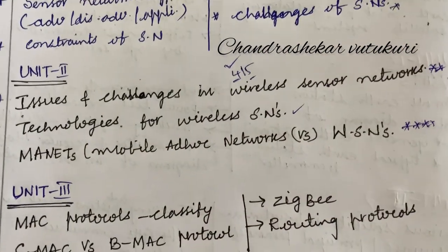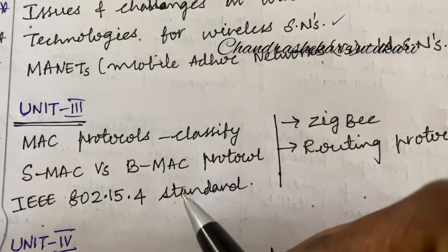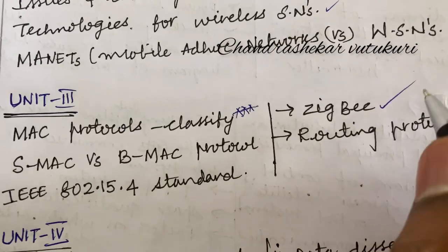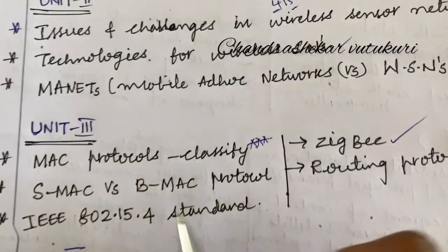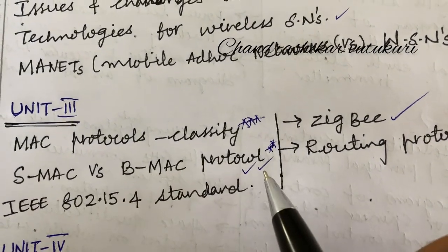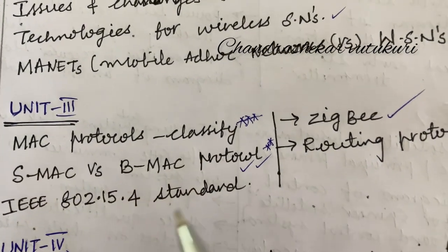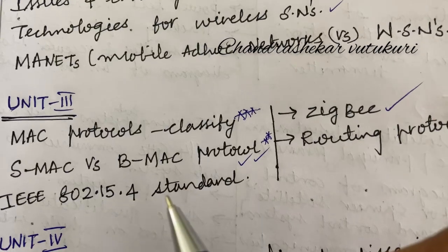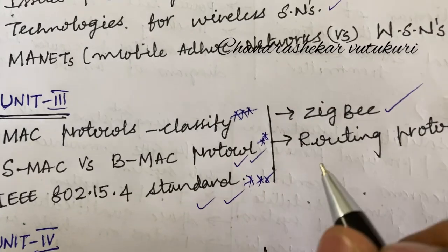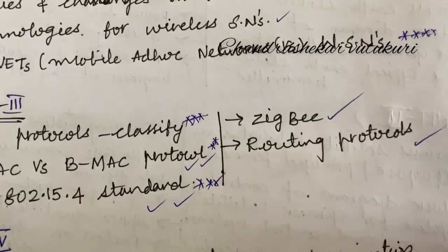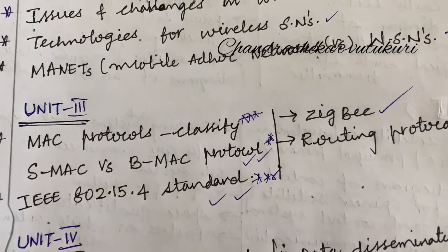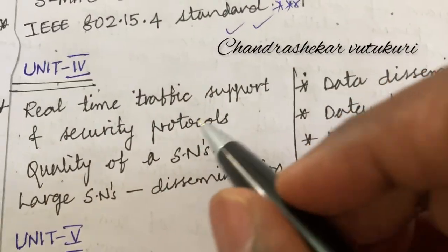Coming to Unit 3: MAC protocols and their classification is a top question. Define and explain ZigBee is a short question. SMAC versus BMAC protocol differences along with diagrams is a top question. The IEEE 802.15.4 standard architecture is also a top question. Routing protocols is set as a short question. Unit 3 is also very short, so work out all of this to score full marks.